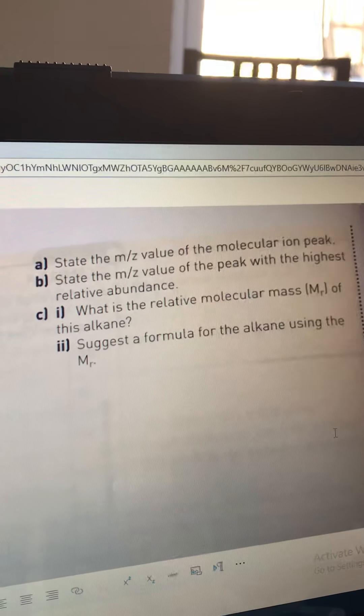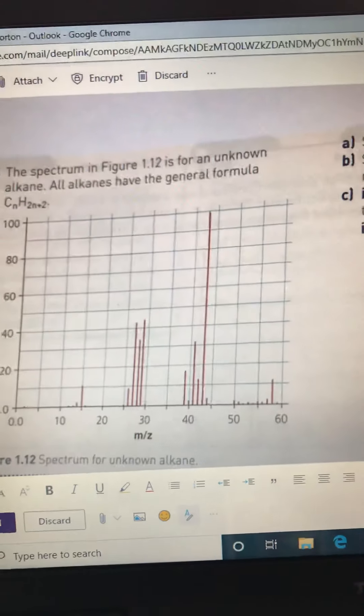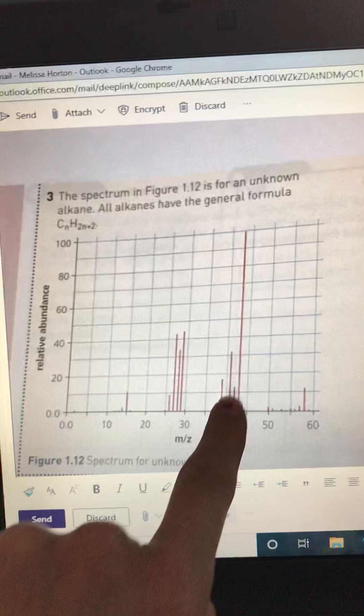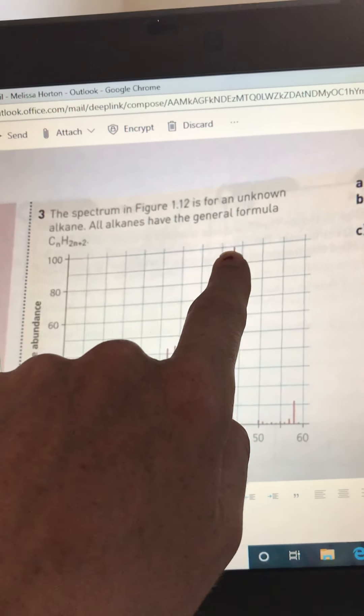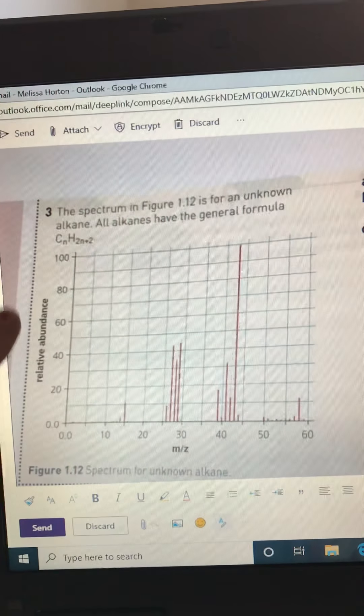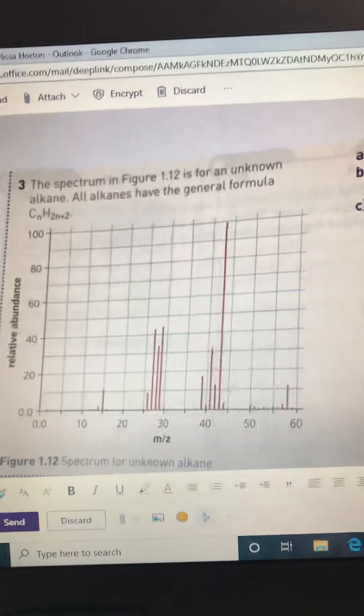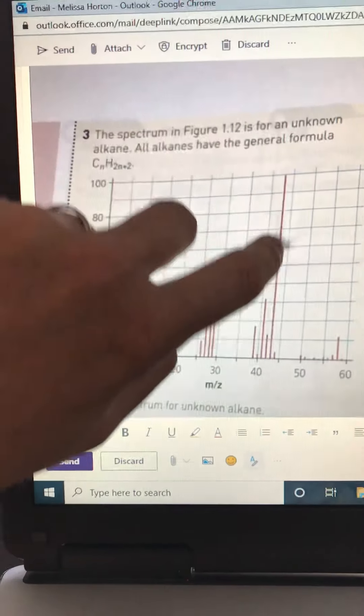Question b: the m/z value of the peak with the highest relative abundance. So we're looking for the tallest peak, which is very clearly this one. That's got the highest relative abundance.